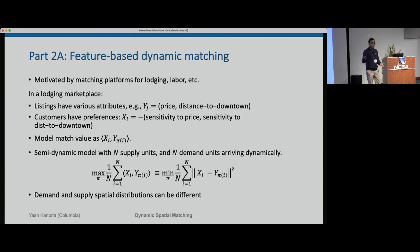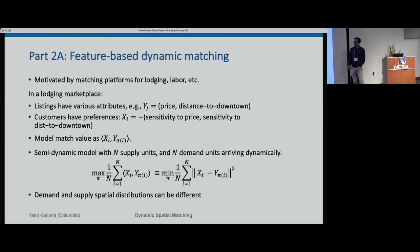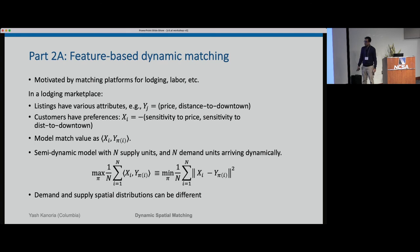Think of listings for a lodging option with attributes like price and distance to downtown. Customers have preferences — a price sensitivity and a sensitivity to the distance from downtown — which serve as the customer's attribute vector. The value of a match is modeled as the inner product between the two, inspired by the recommendation systems literature. What is new here is the matching constraint: unlike Netflix recommending the same movie to everyone, you can't have everybody stay in the same listing on the same dates.